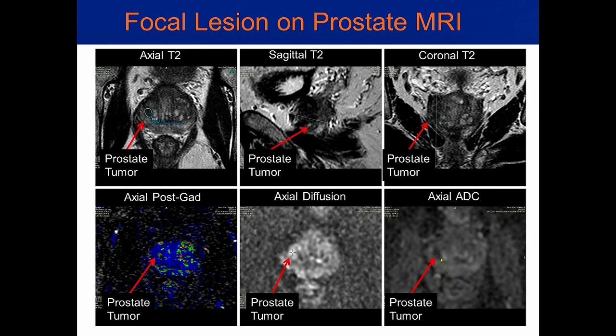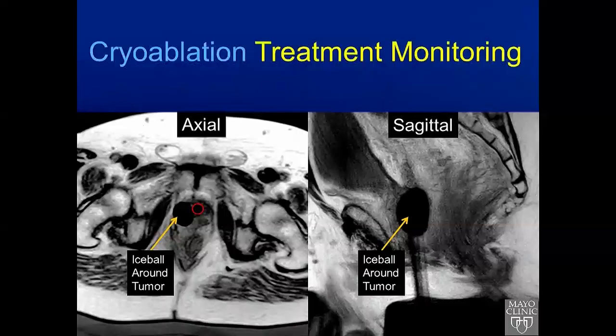Here we have the MR images demonstrating a focal lesion in the right side of the prostate, demonstrated by the arrow on the top images on T2 imaging in multiple planes. On the bottom images we see there is contrast enhancement, but we can also see this tumor with the specialized imaging of diffusion, where the tumor characteristics cause a limited water oscillation and it becomes visible on imaging.